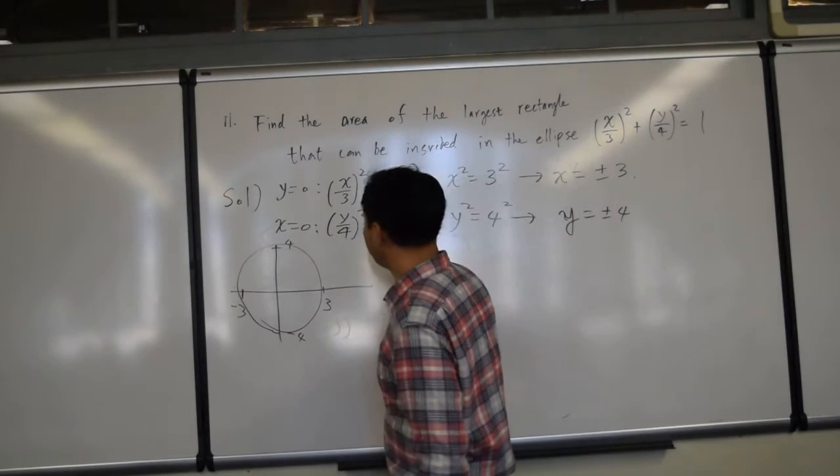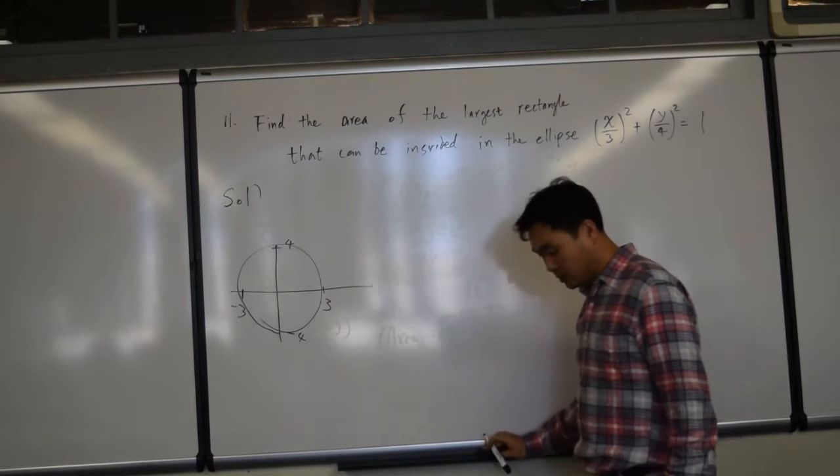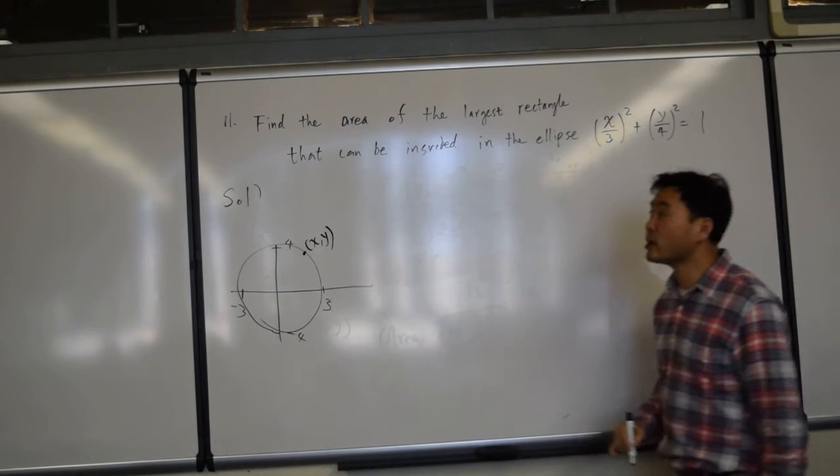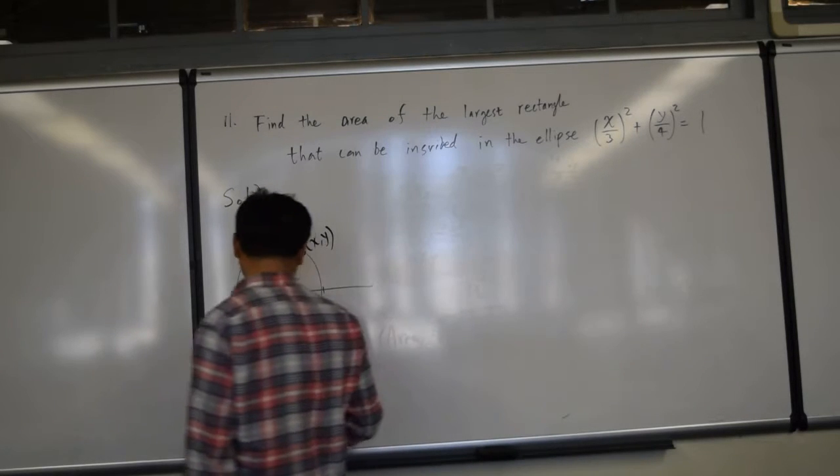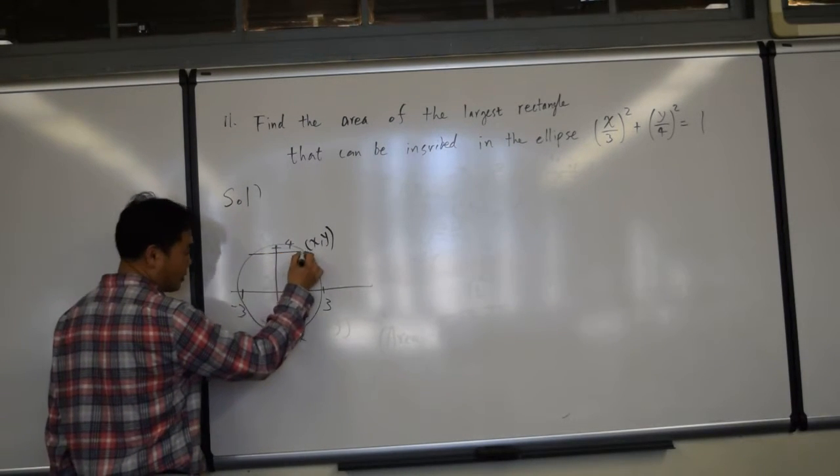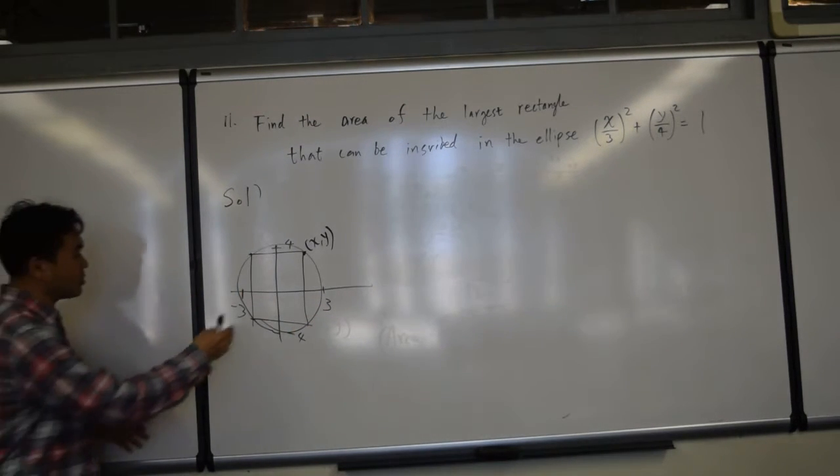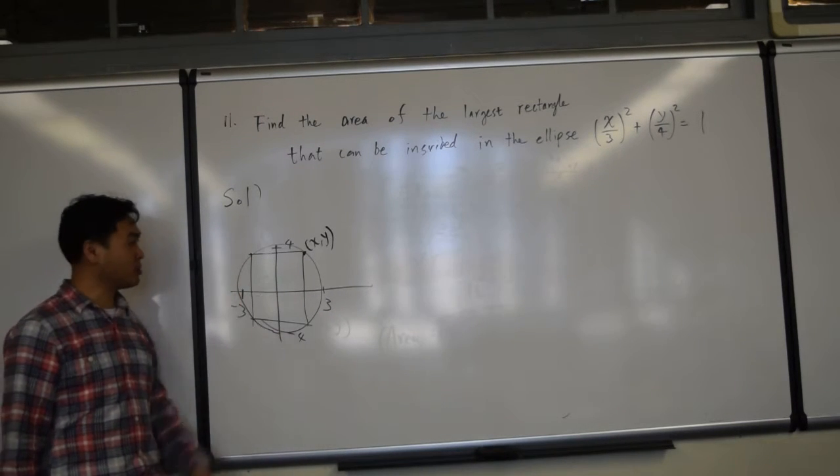Knowing that, let's pick a point here, call it x comma y, and think about the rectangle that's inscribed in this ellipse. It must look like this one. If you tilt it or connect it in some other way, you can't get a rectangle. The only way you can get a rectangle is this one.